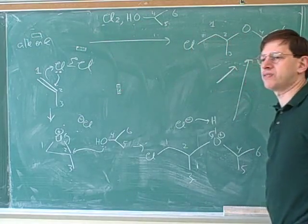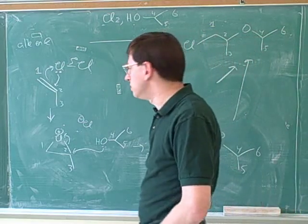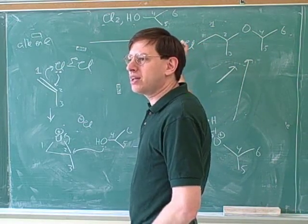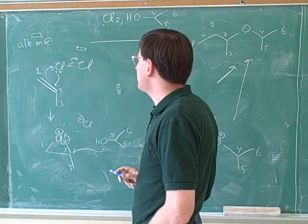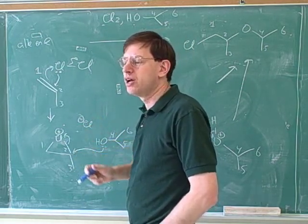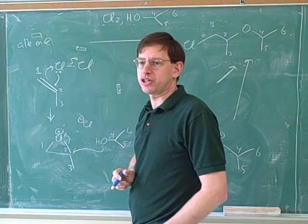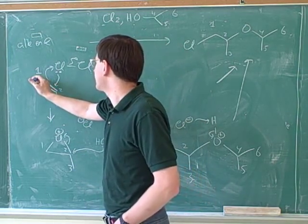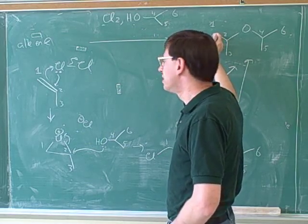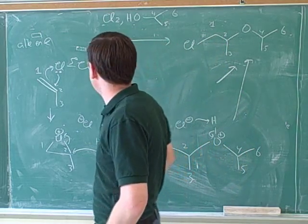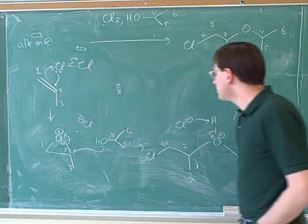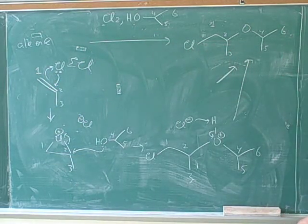We used some very important techniques for synthesis here that you want to try to use on your own. One crucial technique is numbering. Try to get into the habit of numbering. The purpose of the numbers is to tell you which carbons in one picture are the same as the carbons in a different picture — this carbon over here is the same as this one, so they get the same number. That was really helpful here for articulating where the double bond used to be: between carbon one and carbon two.